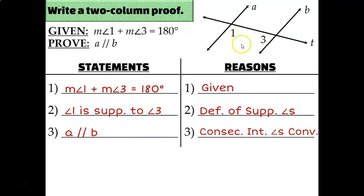Since I showed that angles 1 and 3 are supplementary and they are consecutive interior angles, I can conclude that line A and line B are parallel.